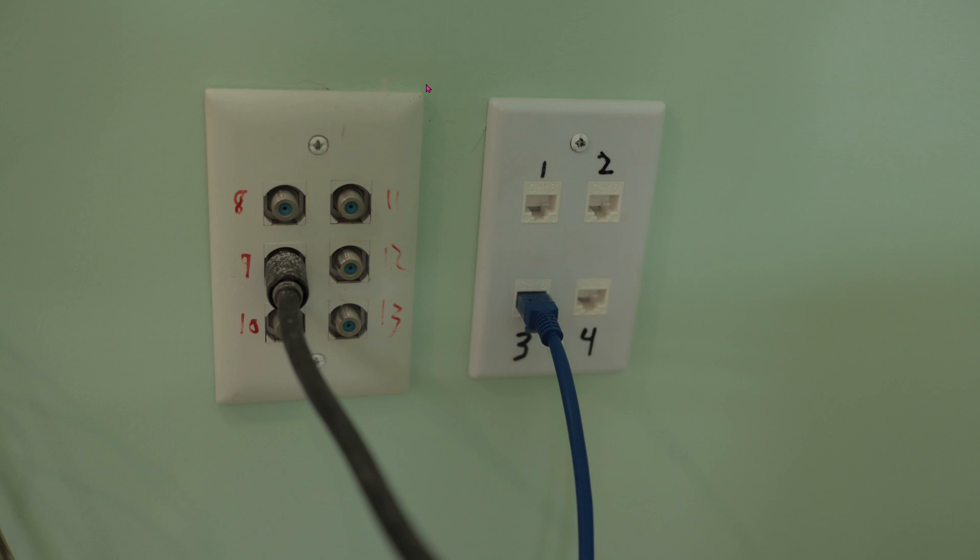With some elbow grease I was able to install cat6 throughout the house, but in some rooms I just could not because I would have to destroy the room, tear down some walls and rebuild it. I'm not going to do that, so I'm just going to use these existing coax inputs and outputs.